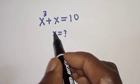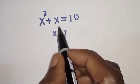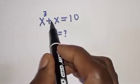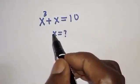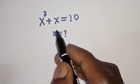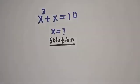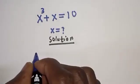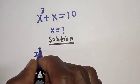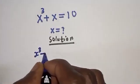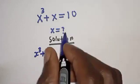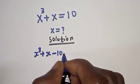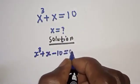Hello, welcome to Magis. In this class I want to find the value of s from this equation: s raised to power 3 plus s is equal to 10. Like, share, comment and subscribe. Solution: we have s raised to power 3 plus s minus 10 is equal to 0.